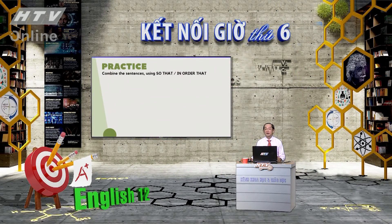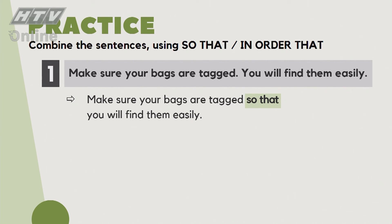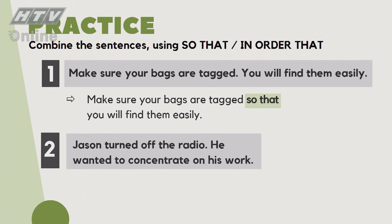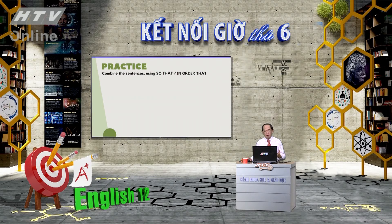Bài tập: nối các câu dùng 'so that' hoặc 'in order that'. Câu 1: 'Make sure your bags are tagged. You will find them easily.' Gắn thẻ tên lên hành lý để sau tìm dễ. Đáp án: 'Make sure your bags are tagged so that you will find them easily.' Câu số 2: 'Jason turned off the radio. He wanted to concentrate on his work.' Tắt radio để tập trung vào công việc. Đáp án: 'Jason turned off the radio so that he could concentrate on his work.'